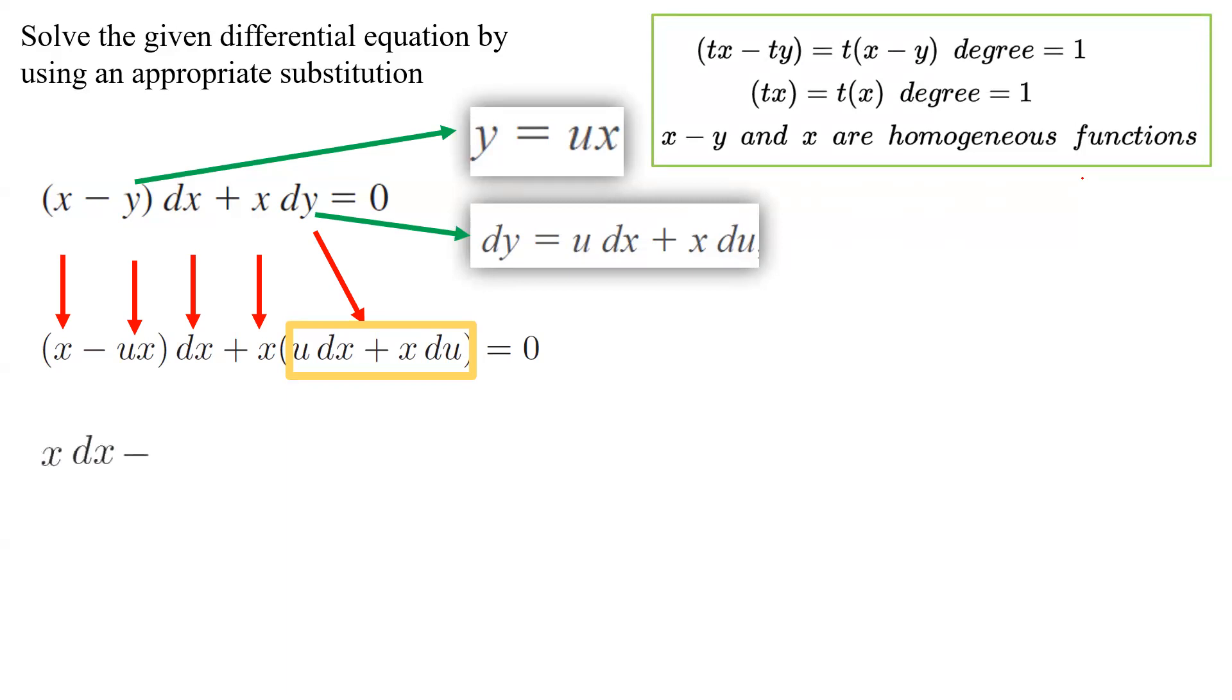We're going to do the distribution: x dx - ux dx + xu dx + x·x du, and on the right-hand side you have zero. We're looking for opposite terms. xu dx and negative ux dx are opposite of each other, so you can get rid of these middle terms. You end up with x dx + x² du = 0.